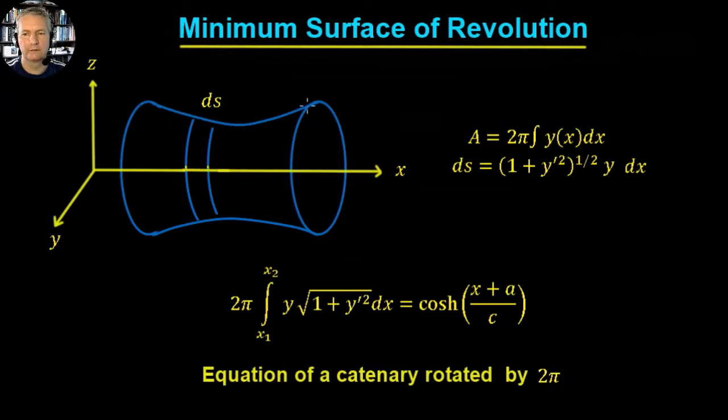So we've already solved this problem whenever we looked at the catenary. You can go back and have a look at that catenary video if you like for a refresher, but really the answer to this is that the minimum surface is given by the catenary which is rotated around this value of 2π.